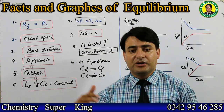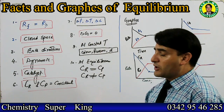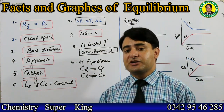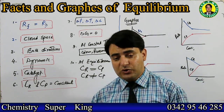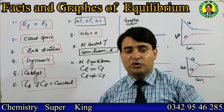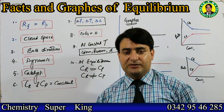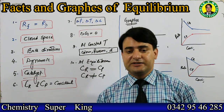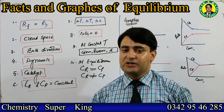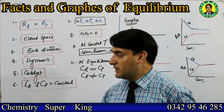At equilibrium, the value of delta G (Gibbs free energy) is zero. So if the MCQ asks: at equilibrium, delta G is zero, greater than zero, smaller than zero, or none of these - the correct answer is zero.